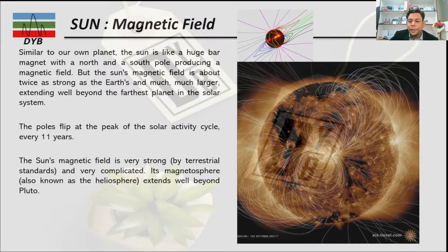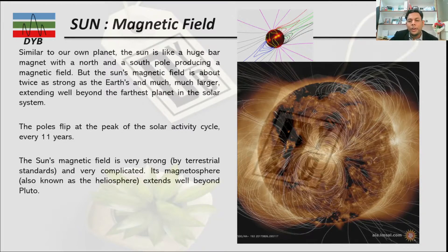The magnetosphere is the region where the Sun's magnetic field reaches. It actually extends well beyond Pluto, so the magnetosphere spans throughout the entire solar system.